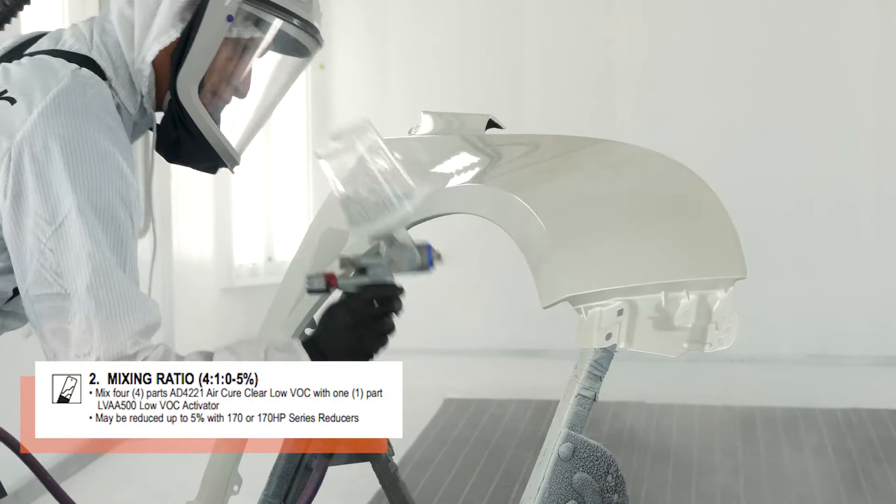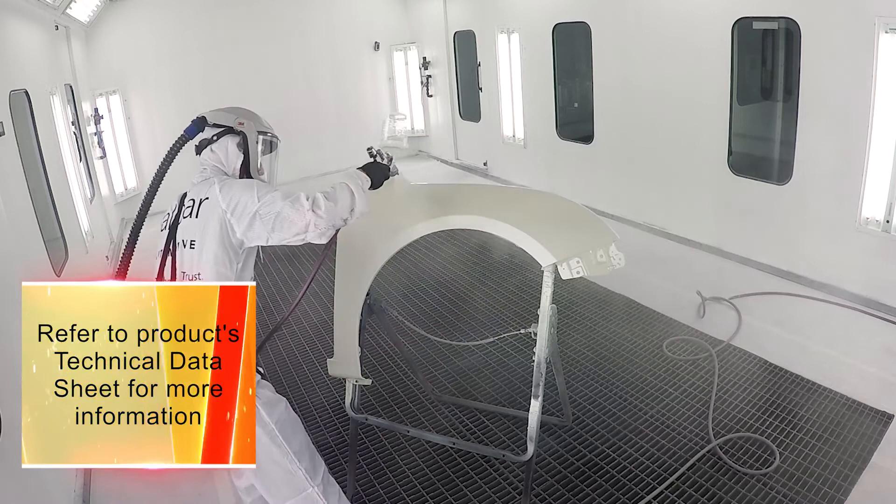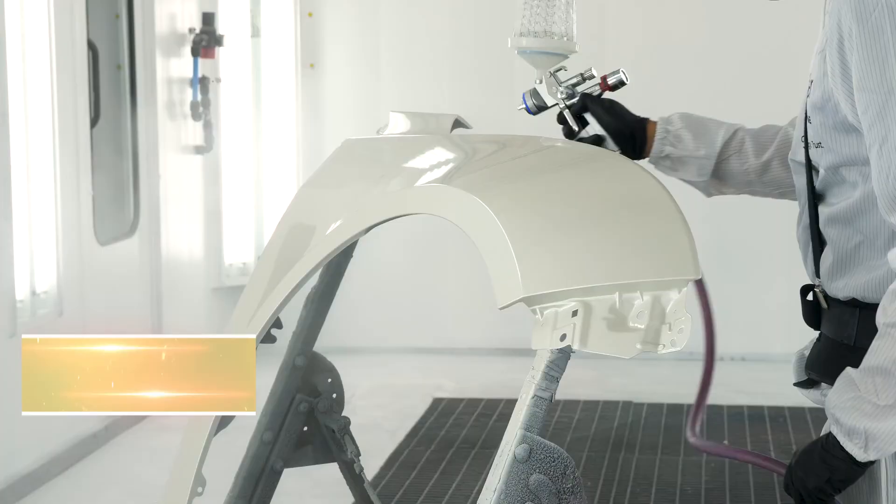For the clear coat application, we're using Valspar Refinish AD4221 Air Dry Clear Coat. This high production air dry clear coat has several different mixing ratios, so we recommend mixing according to the job size and temperature. We will apply two coats of clear coat with no flash time between coats.